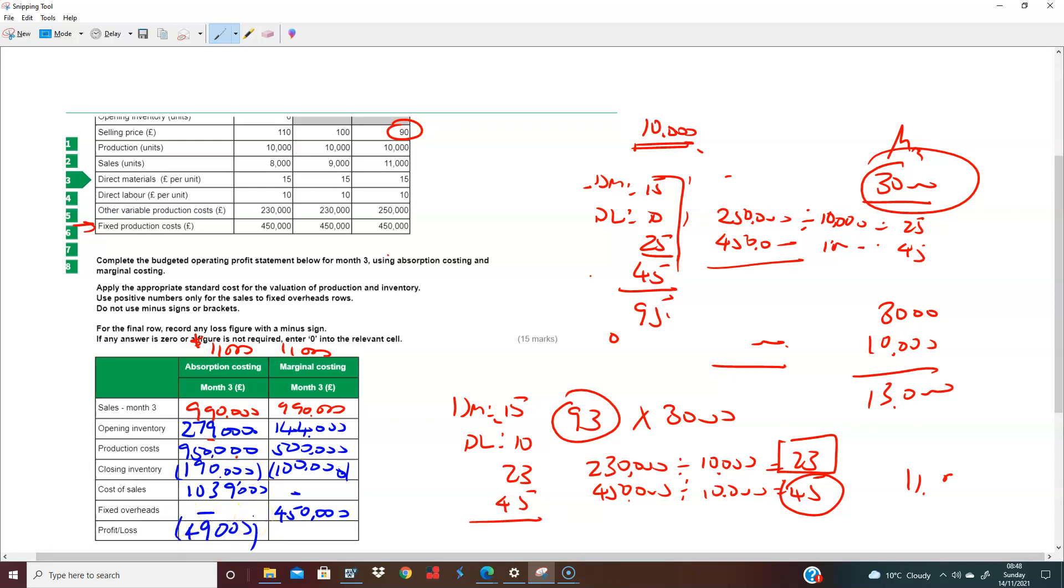And let's do the same thing over here. My cost of sale here is 144,000 plus 500,000 minus 100,000. And I have 544,000 here. So my total profit is 990 minus these two things. So what is 990,000 minus 544,000 minus 450,000? And I have a loss of 4,000 over here.